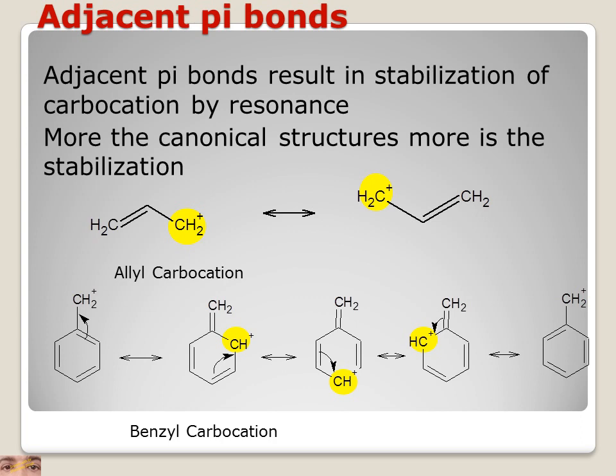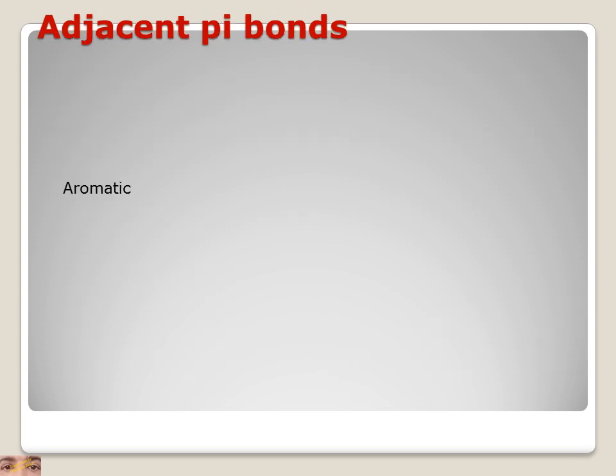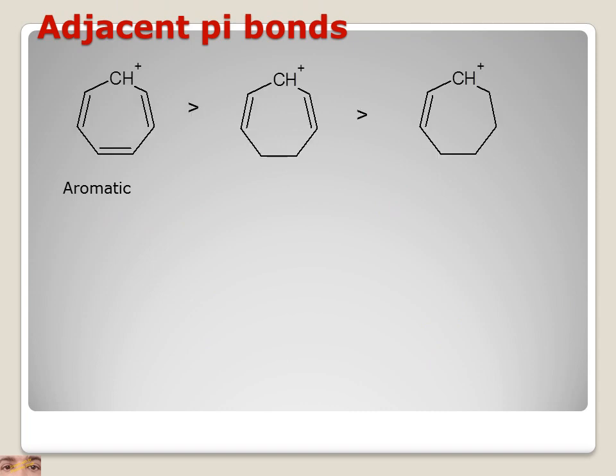In the case of the benzyl carbocation, the positive charge is delocalized over the ortho and para positions. This delocalization produces five canonical structures. More canonical structures means more stabilization.